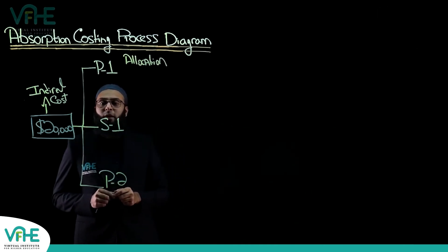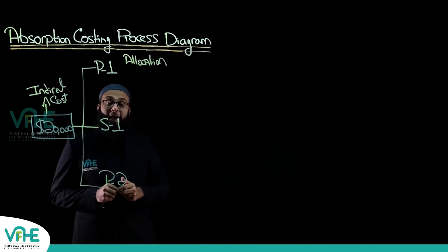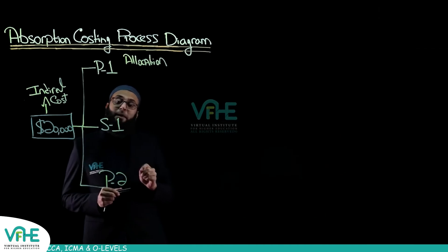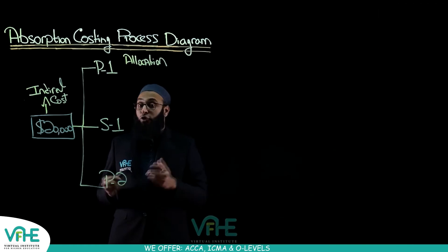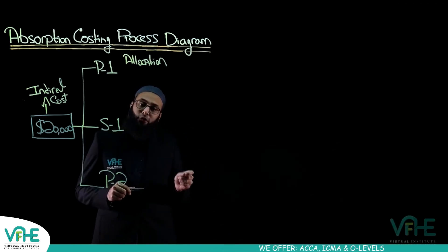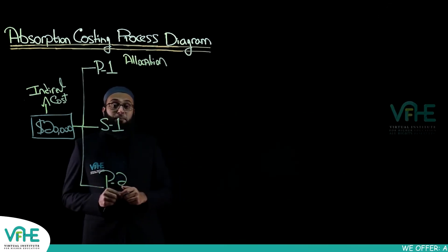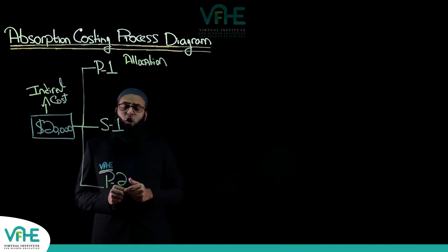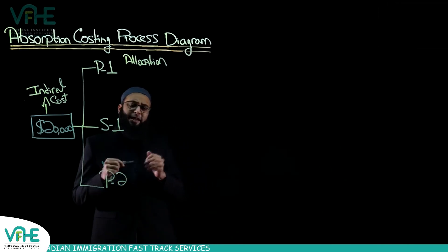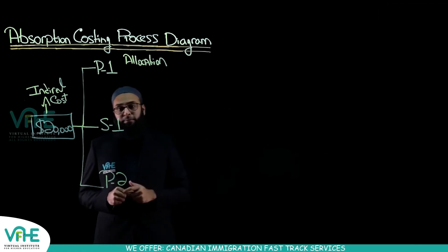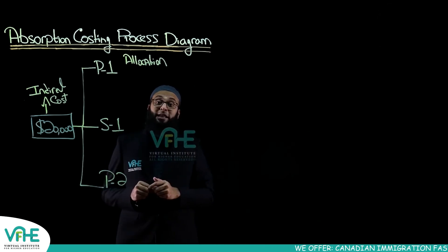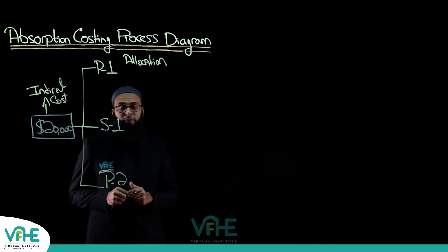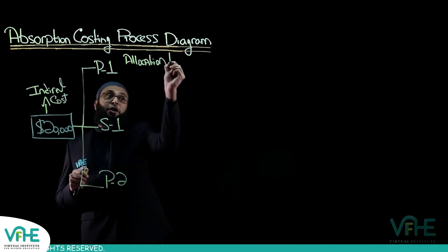Now let's move to the second concept: apportionment. Apportionment is a process that shares common costs between cost centers — costs other than those already allocated directly to departments. It is important that the basis of apportionment should be fair. Examples of common costs include rent and utilities, as these are expenses incurred by all departments. Examples of a fair basis include square meters or number of employees.